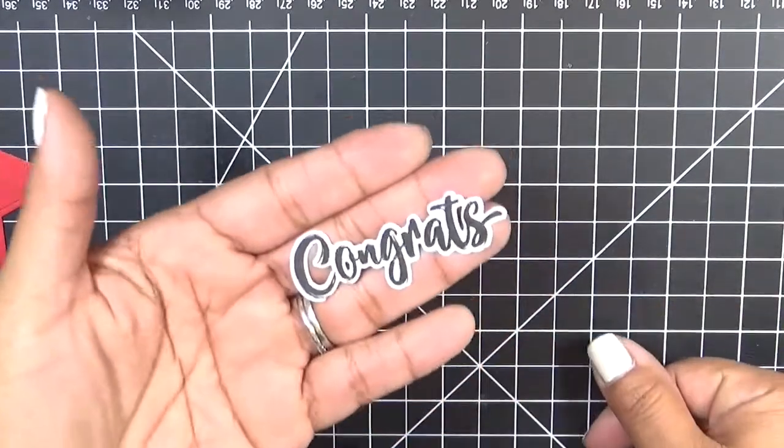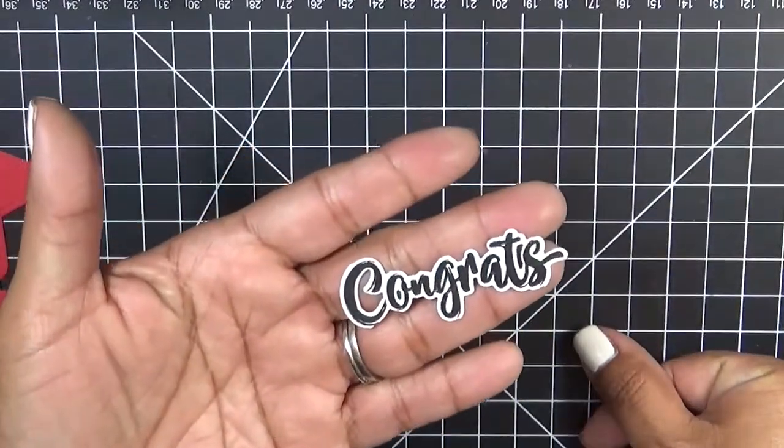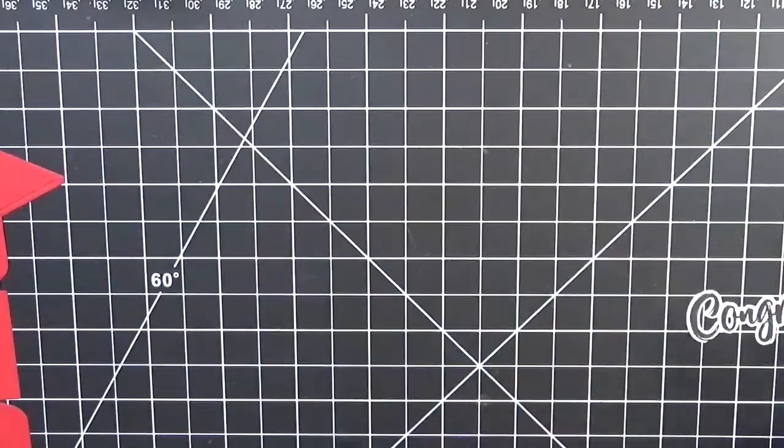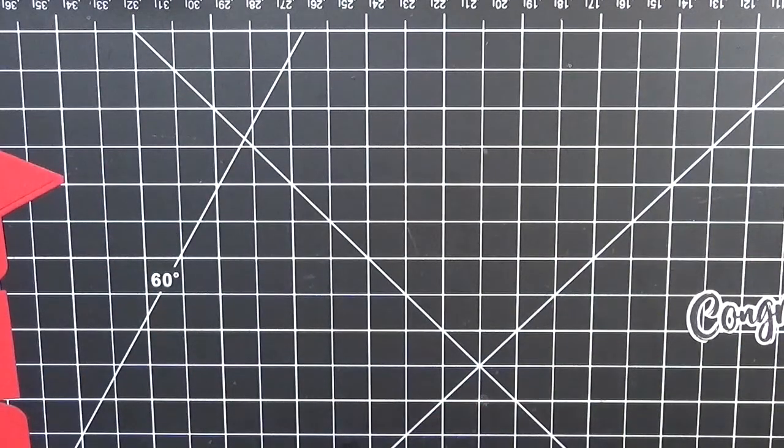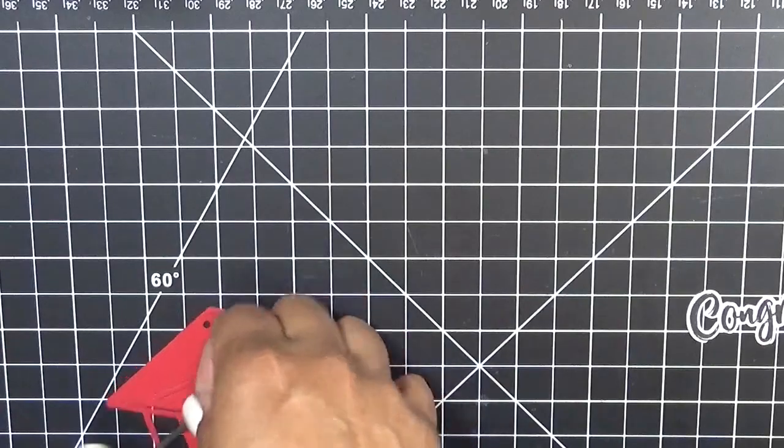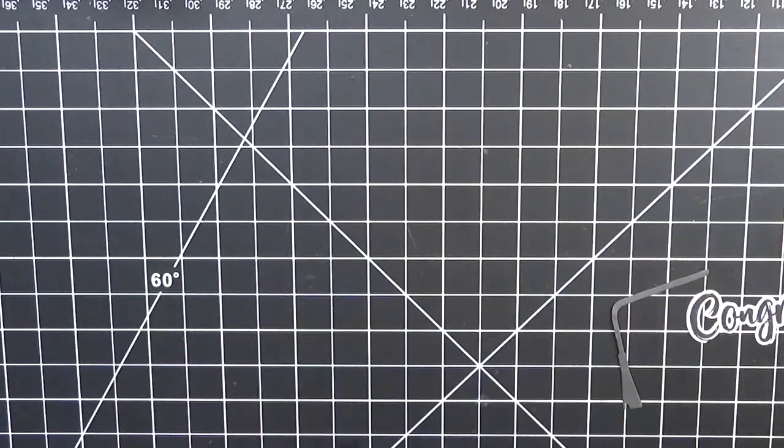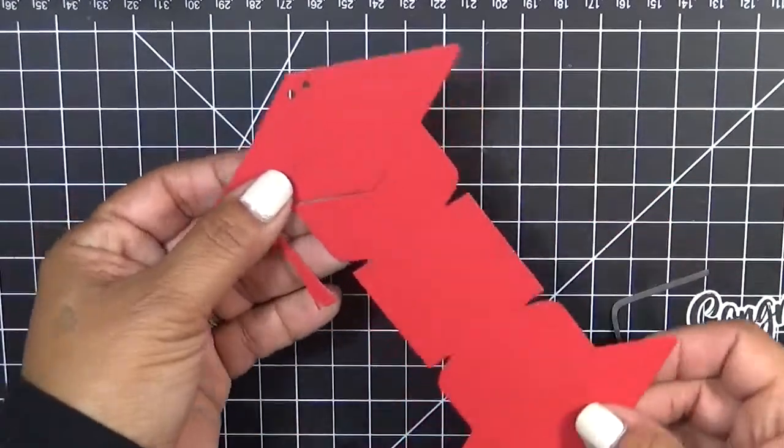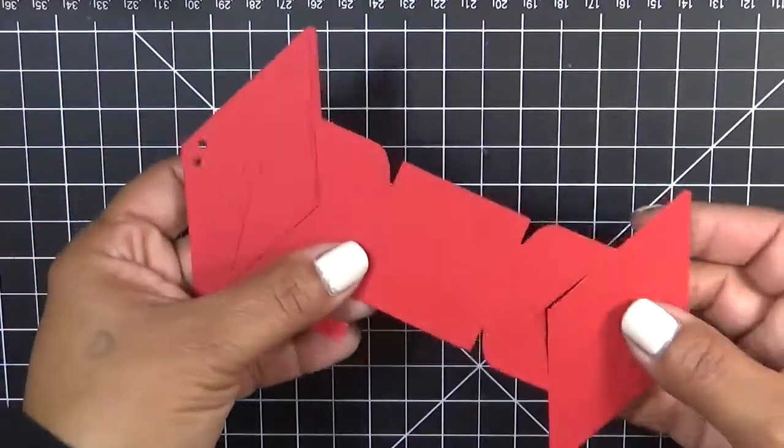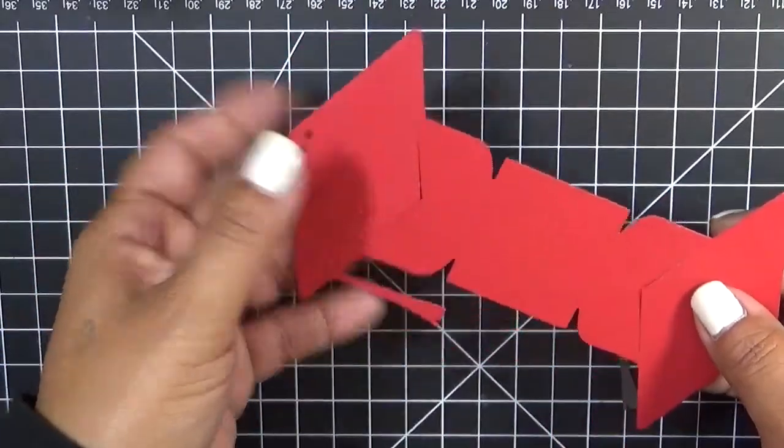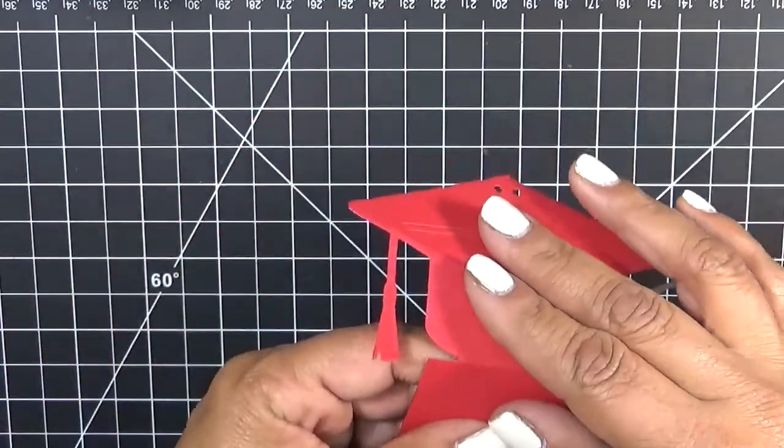Now look how adorable this is, the little congrats, how it looks like cut out. Okay so let me go ahead. We're going to put one together really quickly. So when you cut it out it's going to look like this. Now don't think this is broken, these little cut lines, because they're not. There's a reason why I did it that way.